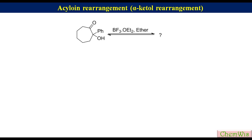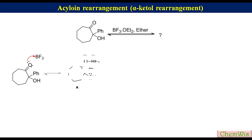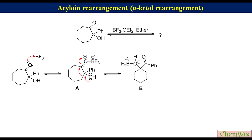The third example is the rearrangement of 2-hydroxy-2-phenylcyclopentanone in the presence of Lewis acid BF3. The ketonic oxygen coordinates with the Lewis acid to produce species A, which is an activated ketone. In species A, two groups can migrate: phenyl and the ring residue. The ring residue preferentially undergoes a 1,2-shift to the ketonic carbon to produce the six-membered ring species B, because a six-membered ring is more stable than a seven-membered ring. Removal of the Lewis acid then produces the product.